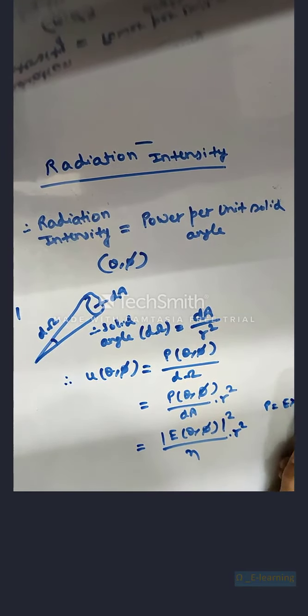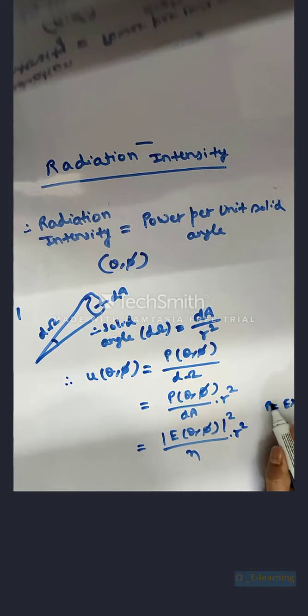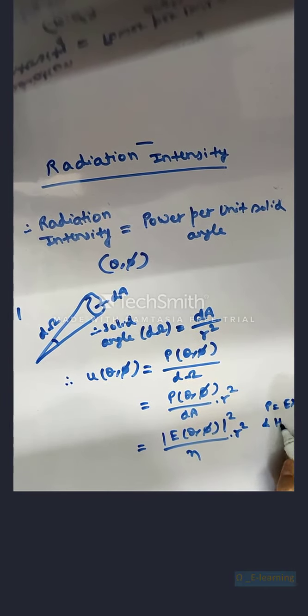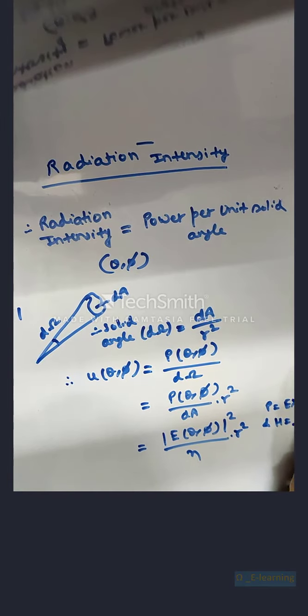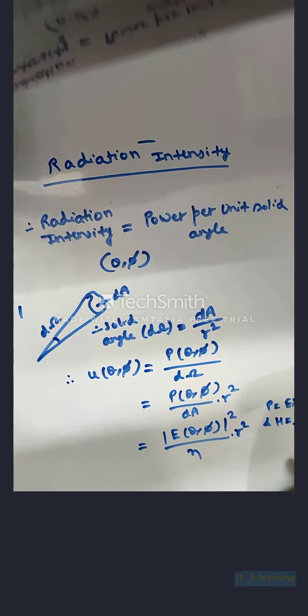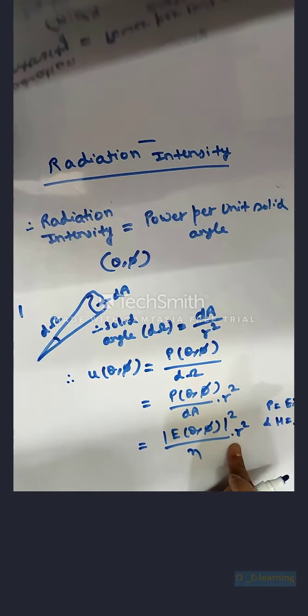So now this is because p is equal to e cross h, and h is equal to e by eta. So therefore, R square will cancel with the decaying E field, and hence will be independent of R. And solid angle d omega does not change. That's all for now, folks.